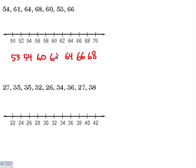We want to make sure we don't miss any numbers, so we're going to count them: 1, 2, 3, 4, 5, 6, 7. That's 7 numbers total.